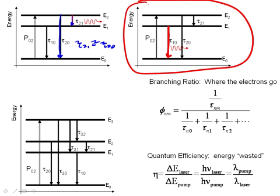One, the branching ratio, which essentially tells you whether your electrons are going where you want them to, and the quantum efficiency, which says, look, you can never be 100 percent efficient with a laser, you're always going to waste some energy, and the difference in the energy levels tells you the best efficiency you could possibly achieve.